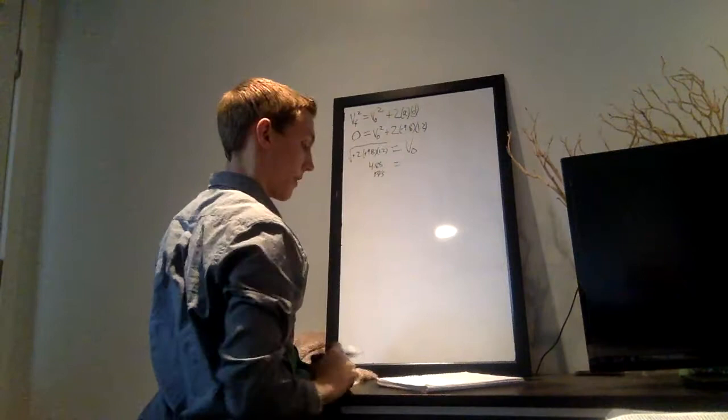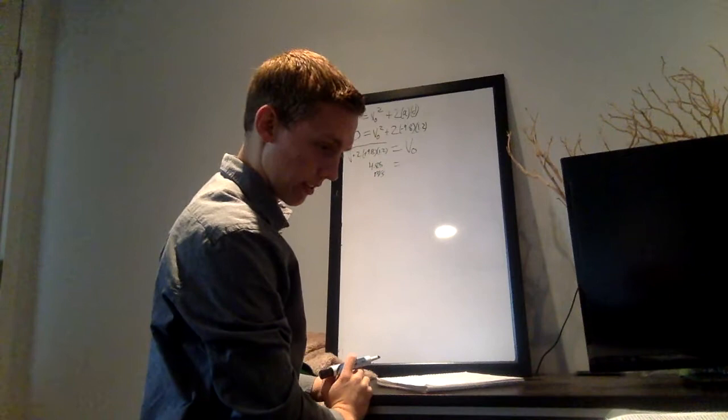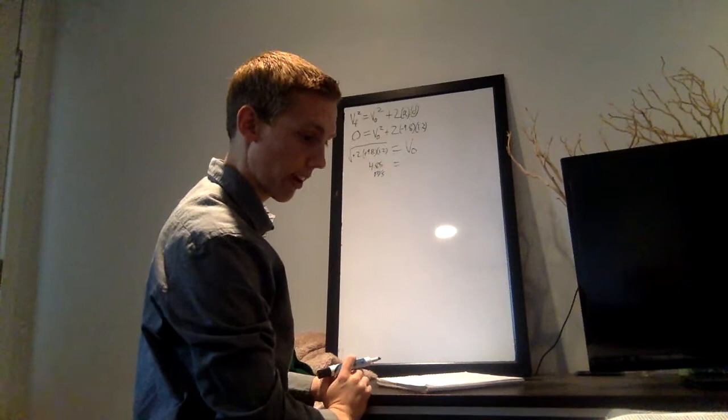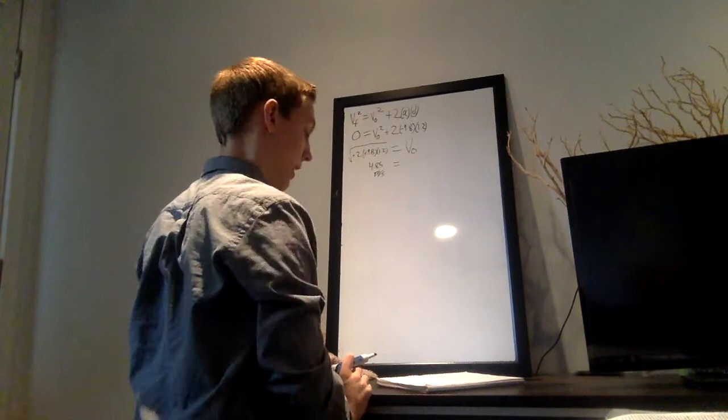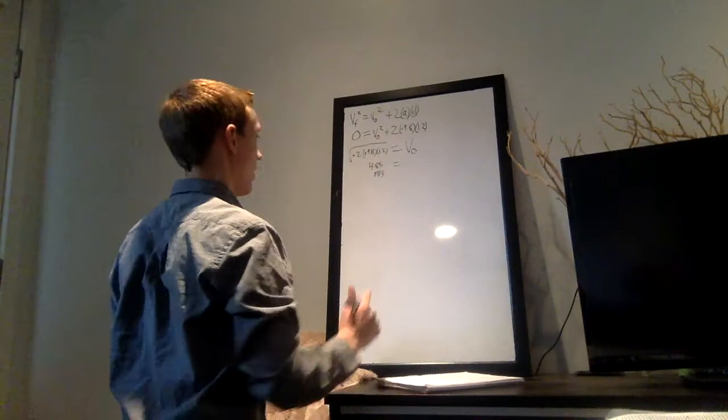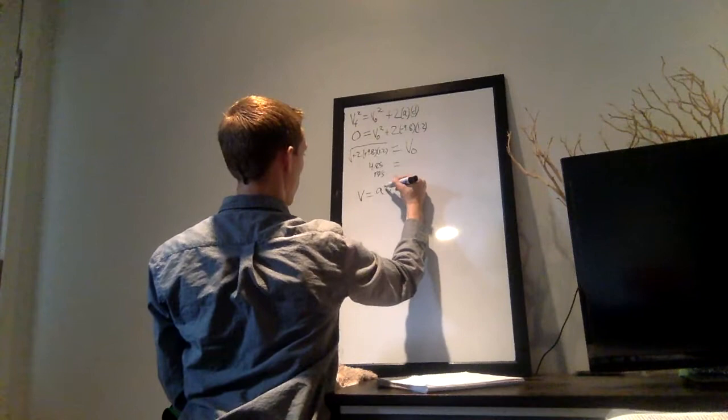Alright, so part B said, if the time of the part of the jump before his feet left the floor was 0.3 seconds, what was his average acceleration while he pushed against the floor? And for that we're just going to say, take the equation that the velocity equals the acceleration times time. The average, yeah, 0.3 seconds.